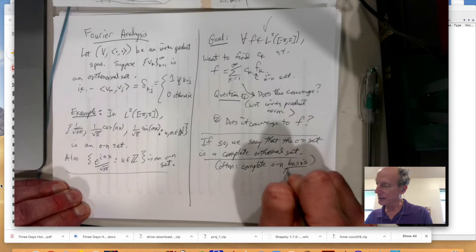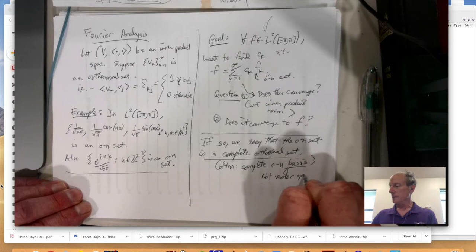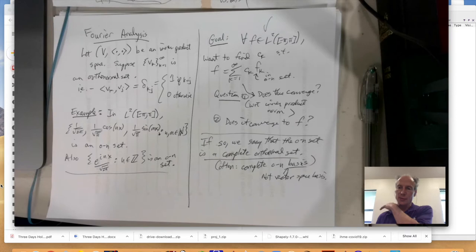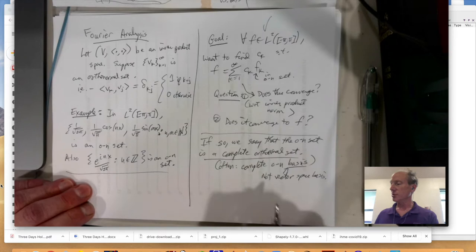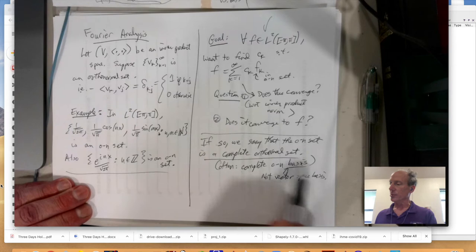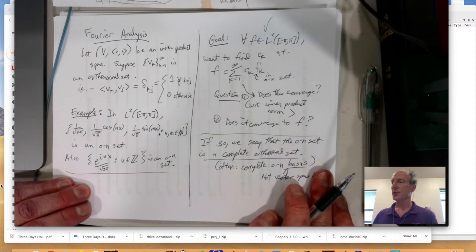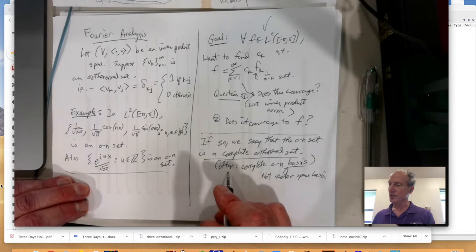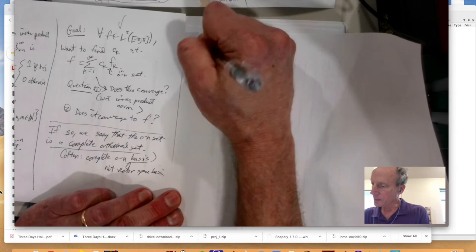And often we say that it's a complete orthonormal basis. But it's not really a vector space basis. Because a vector space basis is always has to be a finite linear combination. You have to be able to write everything as a finite linear combination. And those kind of bases do exist. But we're talking about a special kind of basis, where they're orthonormal, and there's an infinite number of them. And it's not really a basis using this definition.